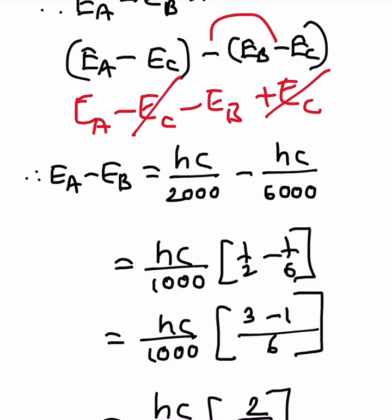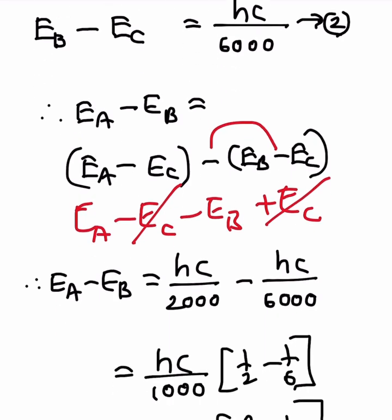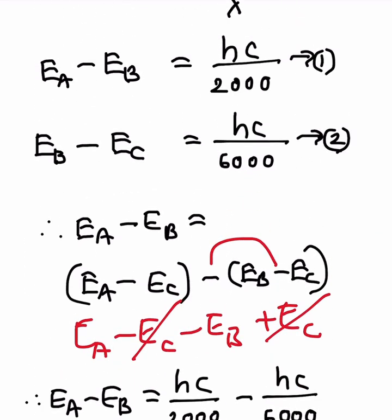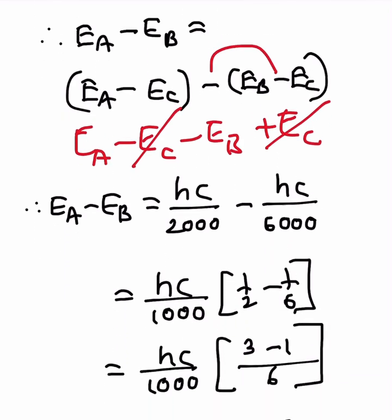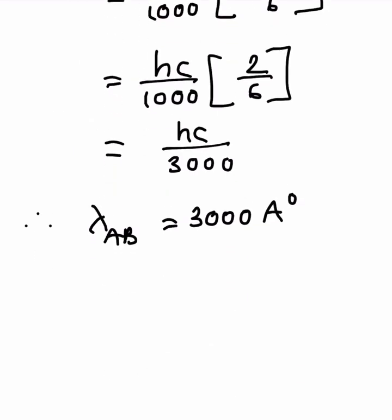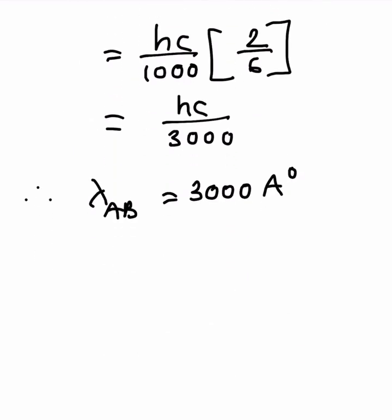Substituting the known equations: E_a minus E_b equals h·c over 2000 minus h·c over 6000. After performing the calculation, this simplifies to h·c over 3000.